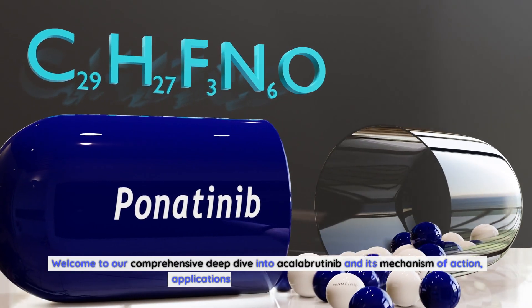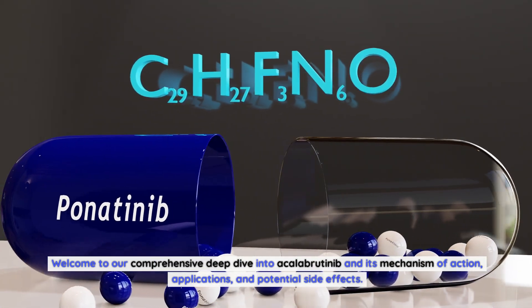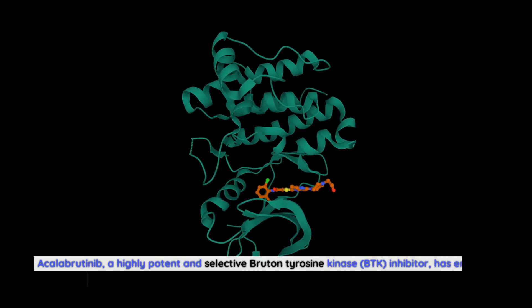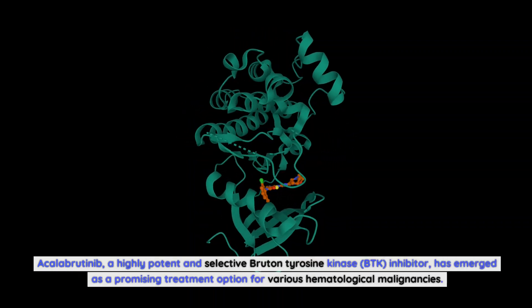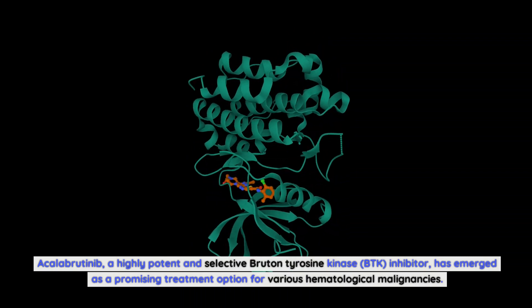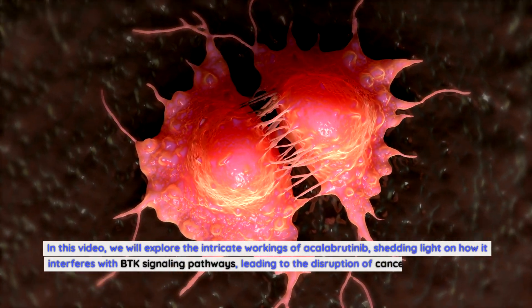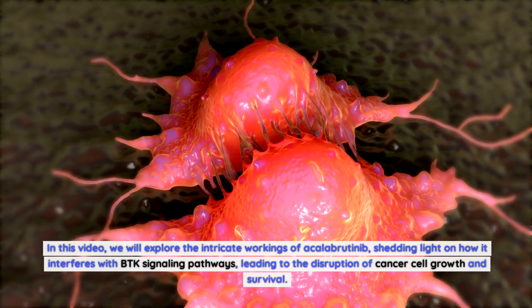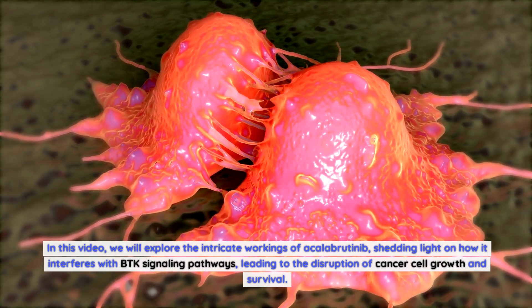Welcome to our comprehensive deep dive into acalabrutinib and its mechanism of action, applications, and potential side effects. Acalabrutinib, a highly potent and selective Bruton tyrosine kinase (BTK) inhibitor, has emerged as a promising treatment option for various hematological malignancies. In this video, we will explore the intricate workings of acalabrutinib, shedding light on how it interferes with BTK signaling pathways, leading to the disruption of cancer cell growth and survival.